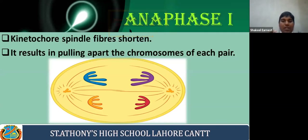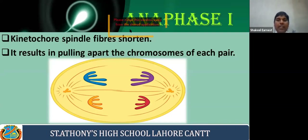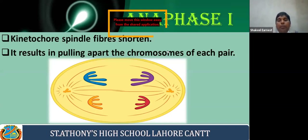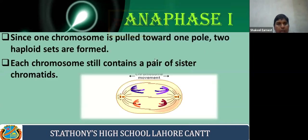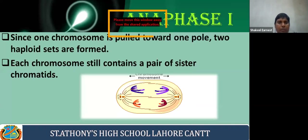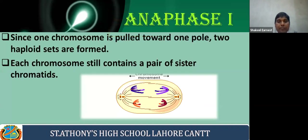Anaphase one is very important for the reduction division. Since one chromosome of each homologous pair is pulled toward one pole, two haploid cells will eventually form. Each chromosome still contains a pair of sister chromatids — so every chromosome arriving at each pole still has two chromatids joined at the centromere. This is a key feature distinguishing meiosis one from meiosis two.